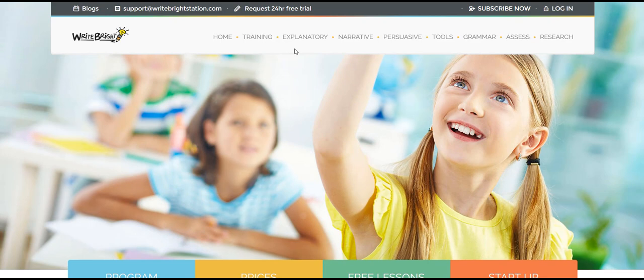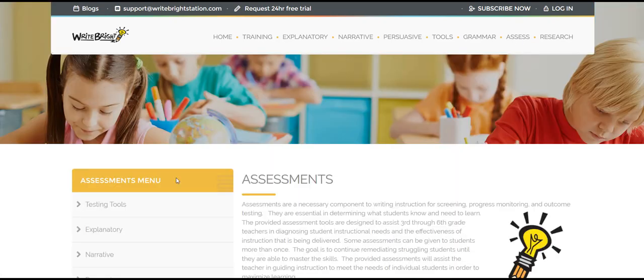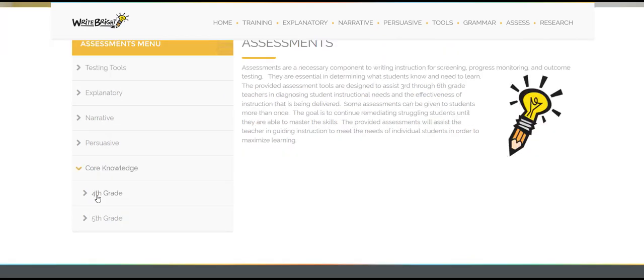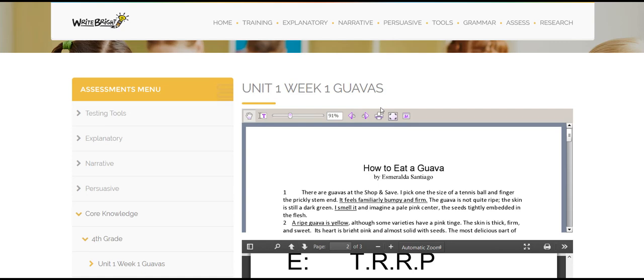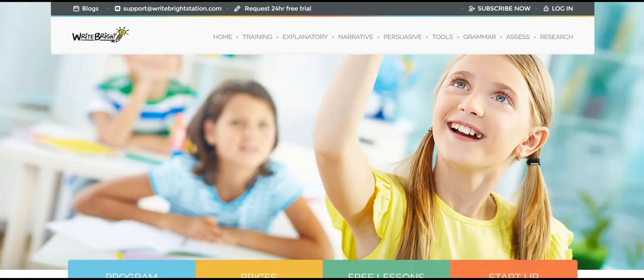From the home page, choose the Assess tab. On the left Assessment menu, go down to Core Knowledge. Select your grade level and select the lesson. The lesson can be printed from this site. Talk to your principal about a site license for your school.